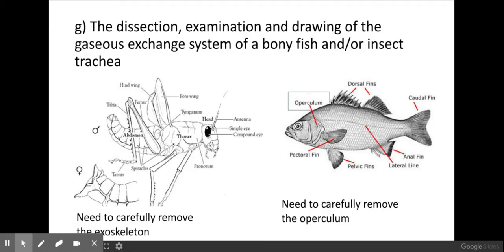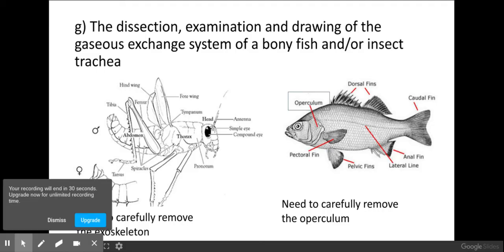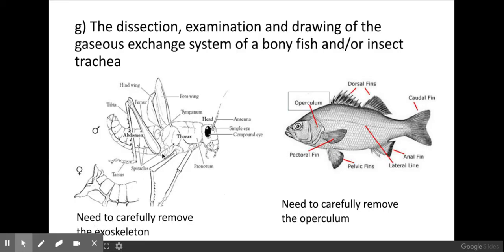And those are the main things that you need to be aware of here. Obviously ethically try and source as much as possible, but the key things here are the removal of the exoskeleton in an insect and the removal of an operculum in the fish, in order to see either the spiracles in the insect or the gill filaments within the fish.